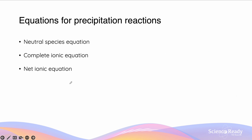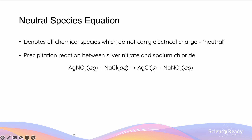When writing equations for precipitation reactions, there are three methods to express what reactions are occurring: the neutral species equation, the complete ionic equation, and the net ionic equation. The neutral species equation is a type of equation which denotes all chemical species that do not carry any electrical charge, meaning they are neutral. The example of the neutral species equation for the precipitation between silver nitrate and sodium chloride is demonstrated in the equation below.